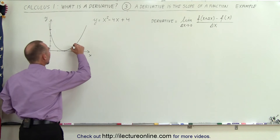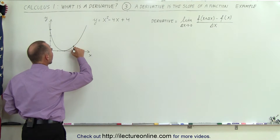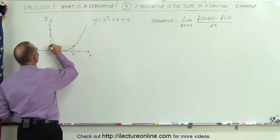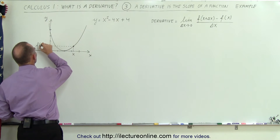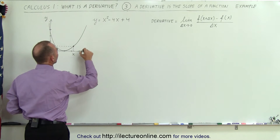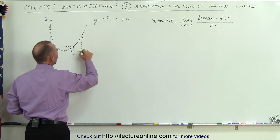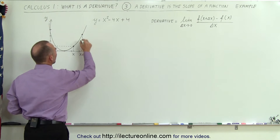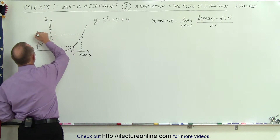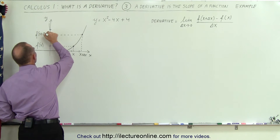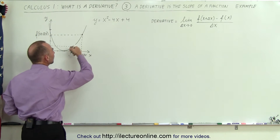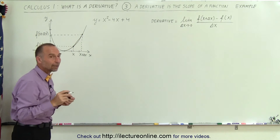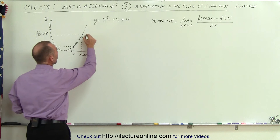The concept is: we're going to take one point right here and say that its coordinates are x for the x-coordinate, and for the y-coordinate, it's going to be the function evaluated at x. Then we're going to pick another point a little bit further away. So it's going to be x plus delta x. When we evaluate that function, we're going to get f of x plus delta x. The slope of that, which would be the secant line, can be found by finding the rise over the run.